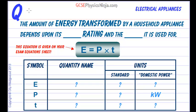Remembering that a power of one watt means that one joule is being transformed into another type of energy every second. It then makes sense that the amount of energy transformed by a household electrical appliance depends upon its power rating, that's how many watts it uses.